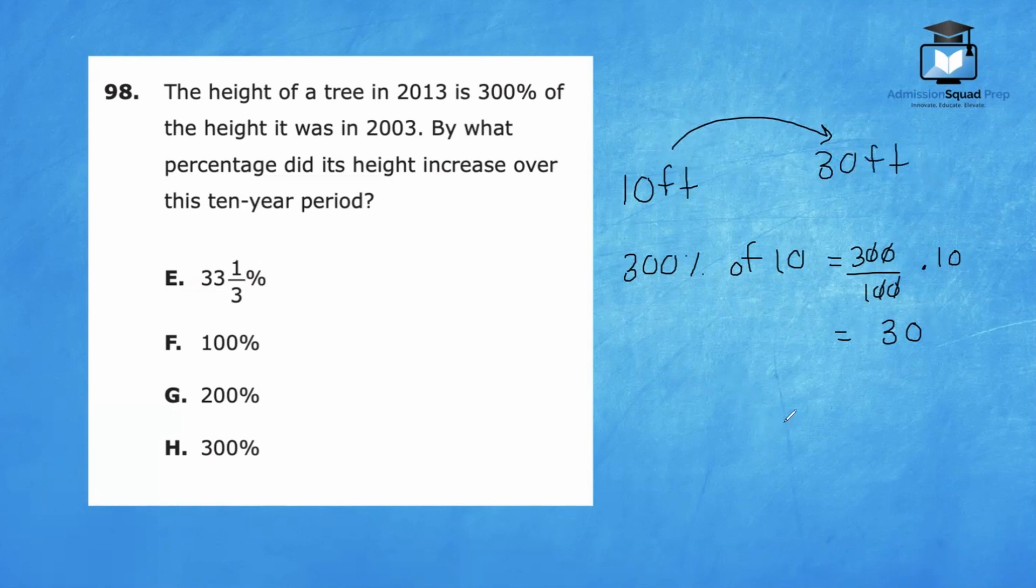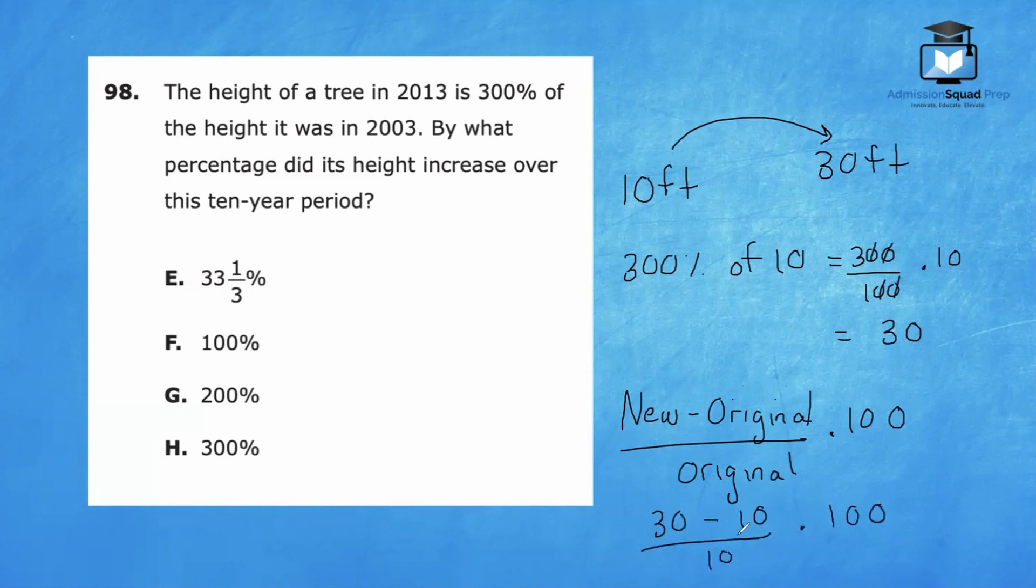The question is, by what percentage did its height increase over this 10-year period? The percent increase formula is new minus original over original times 100. The new height in our example is 30 feet minus the original height, which is 10 feet divided by 10, all times 100. So we have 20 over 10 times 100. These zeros will cancel out, and now we're left with 200%. So the correct answer is choice G.